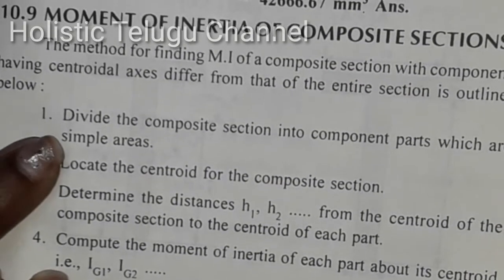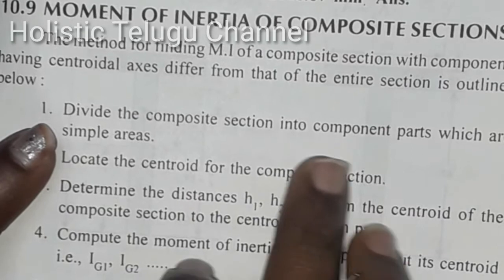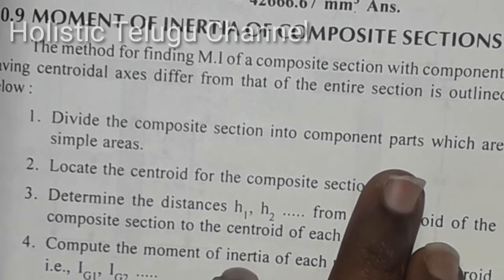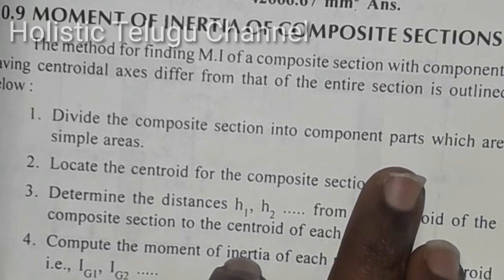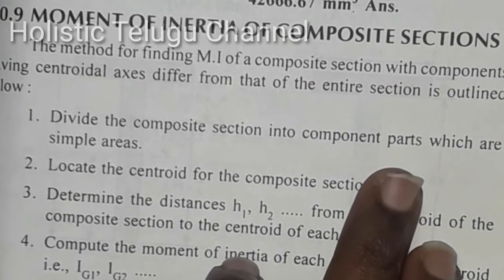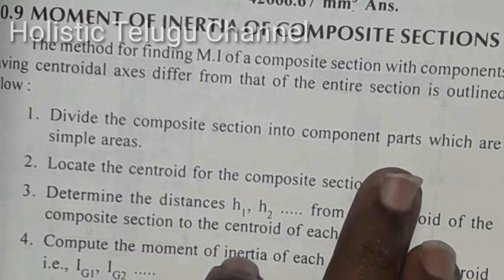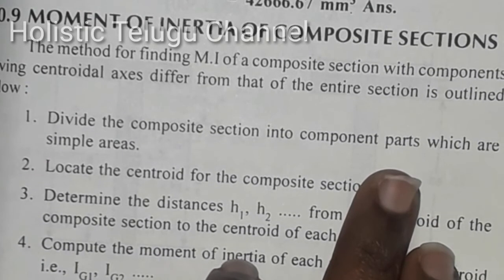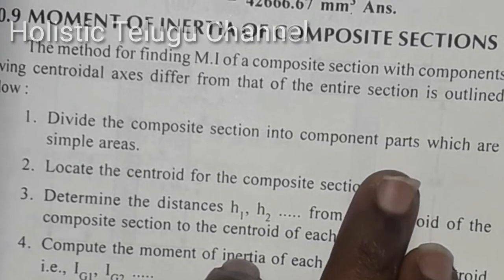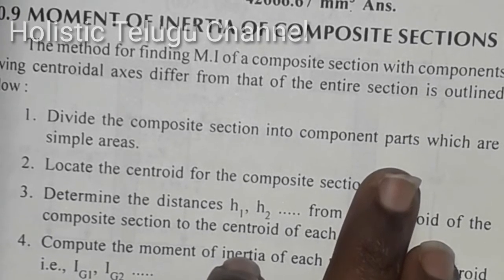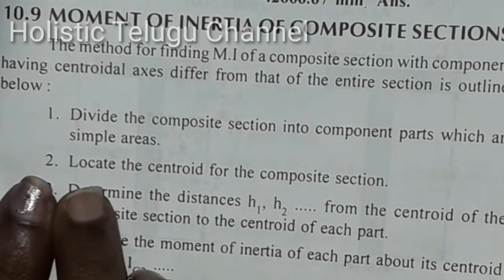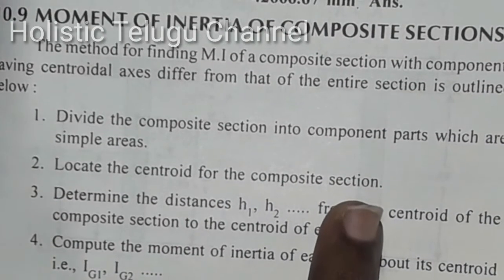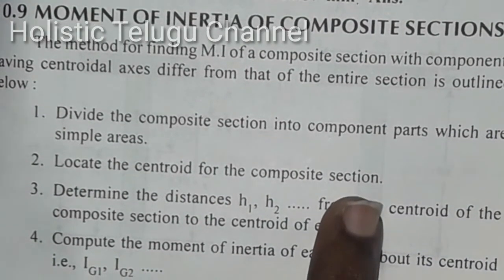First point: divide the composite section into component parts which are simple areas. We will divide the component parts of the composite section.